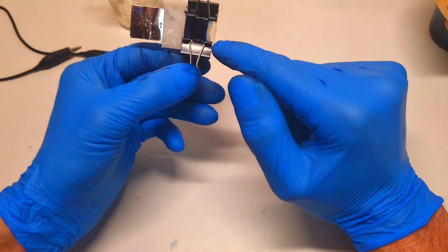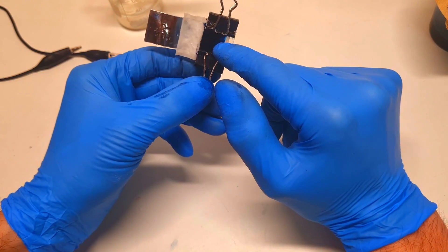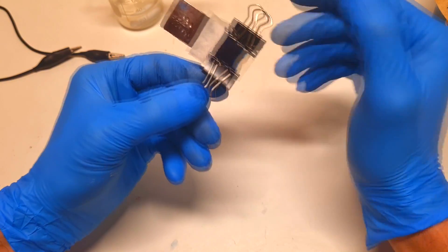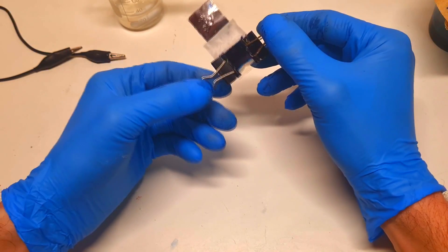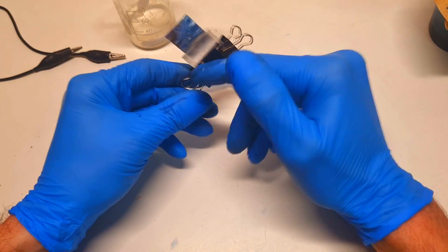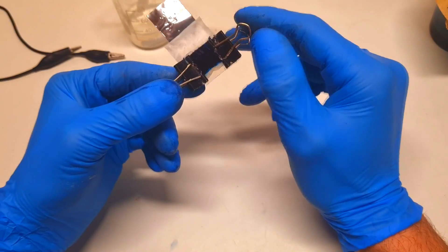And then I coat the indium tin oxide glass with Prussian blue paste. This Prussian blue paste I make when I mix the Prussian blue powder with the electrolyte, and then I simply coat the indium tin oxide glass, and that's it.